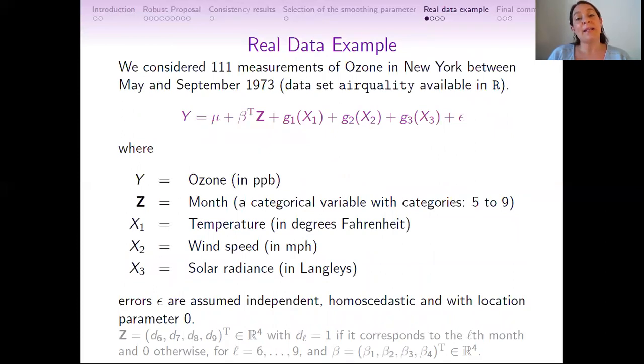With a real data example, we want to compare the performance of the robust proposal with its classical counterpart. We considered 111 measurements of ozone in New York between May and September 1973, corresponding to the air quality dataset available in R. Here, the ozone is modeled as a partially linear additive model with its linear part corresponding to the categorical variable month and three additive components corresponding to temperature, wind speed, and solar radiance.